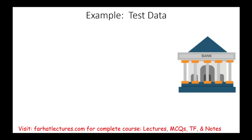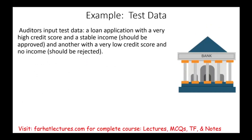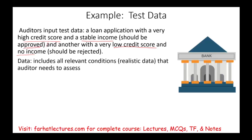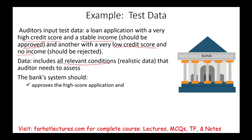Let's look at an example. Assume we're auditing a bank and checking the software that approves loans. The auditor inputs test data for a client with a very high credit score and stable income — which should be approved — and data for a low credit score and no income — which should be rejected — and runs both through the system. The data should include all relevant conditions, which is why we need a specialist. If working properly, the system should approve the high score and reject the low score application.